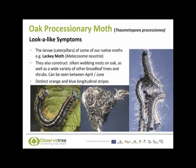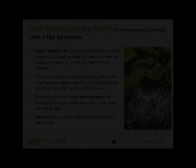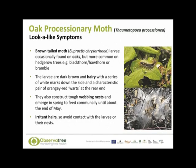Look-alike symptoms can be produced by some of our native moths and caterpillars, such as the larvae of the lackey moth. These can be confused with oak processionary moth because they also construct webbing nests on oak trees and are usually seen between April and June. However their morphology is very different, as they have distinctive orange and blue stripes.